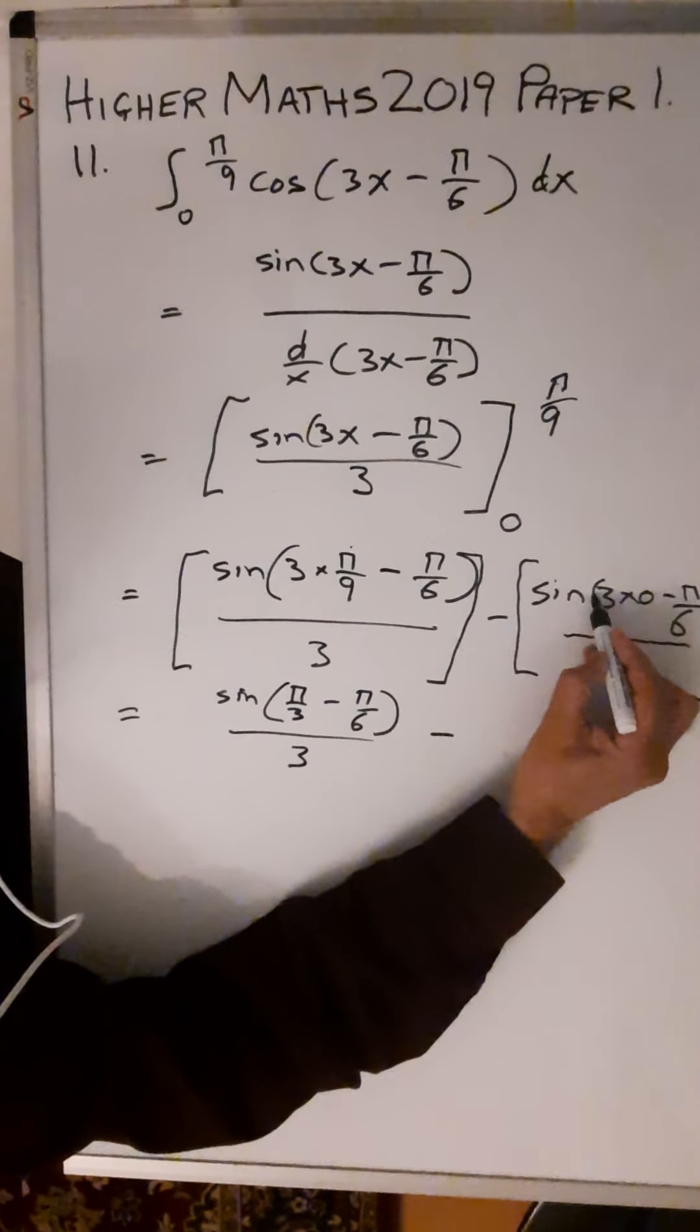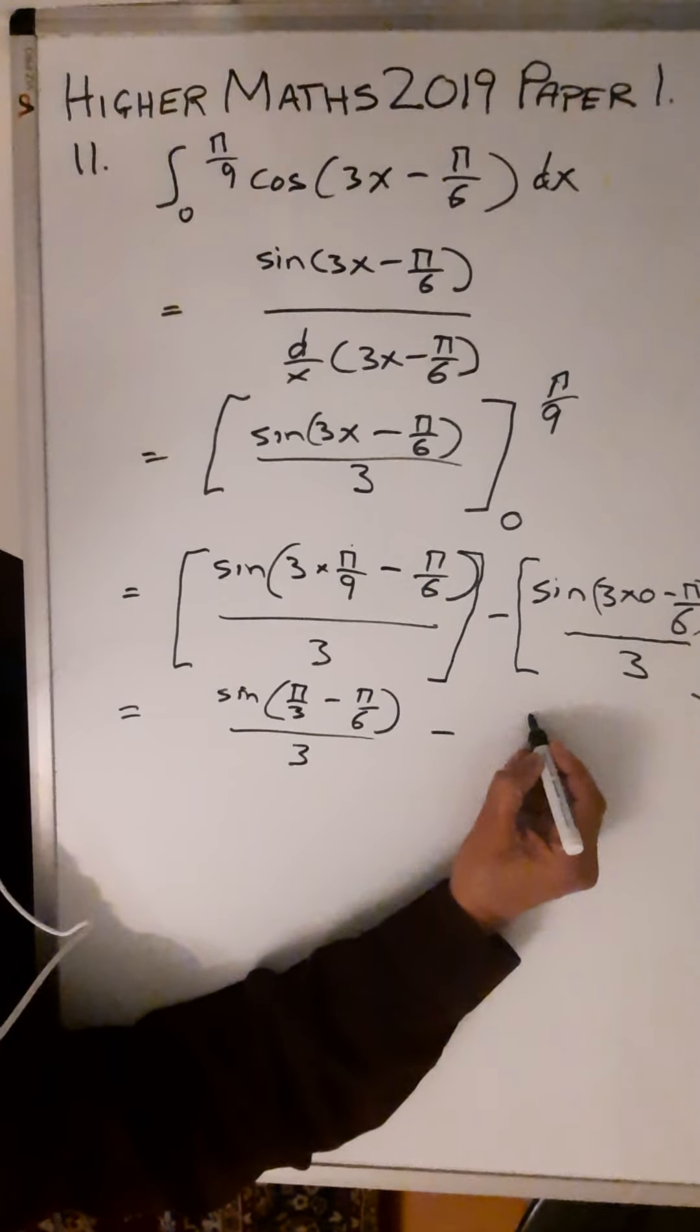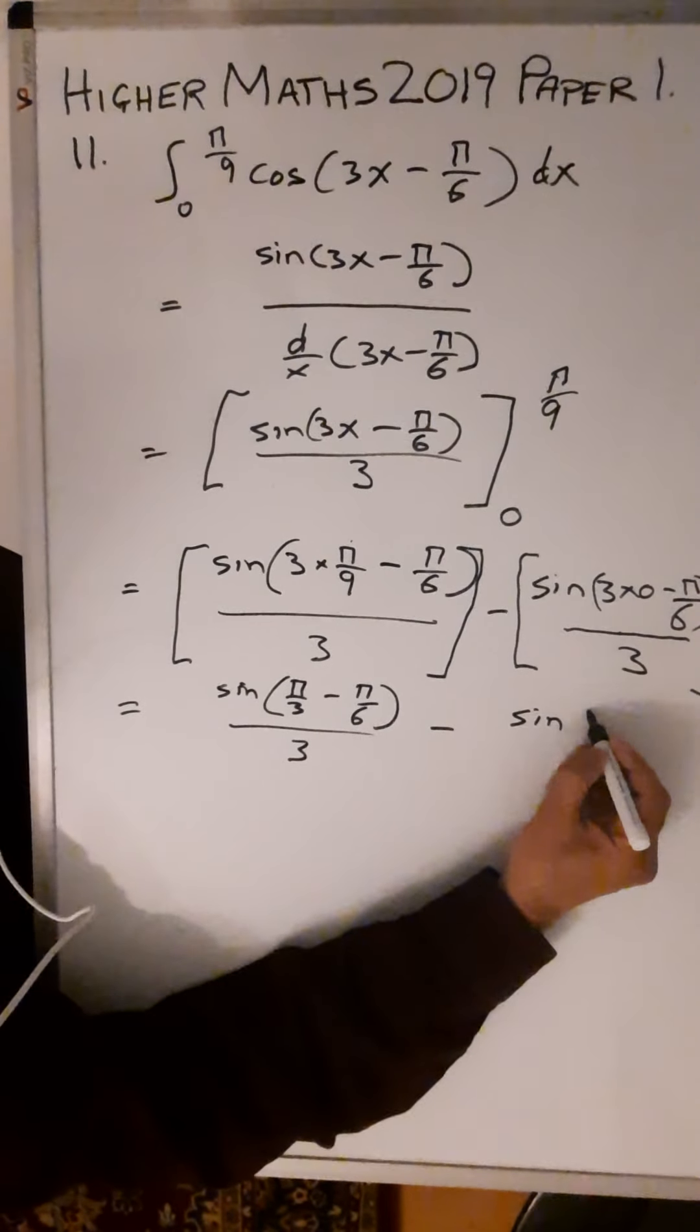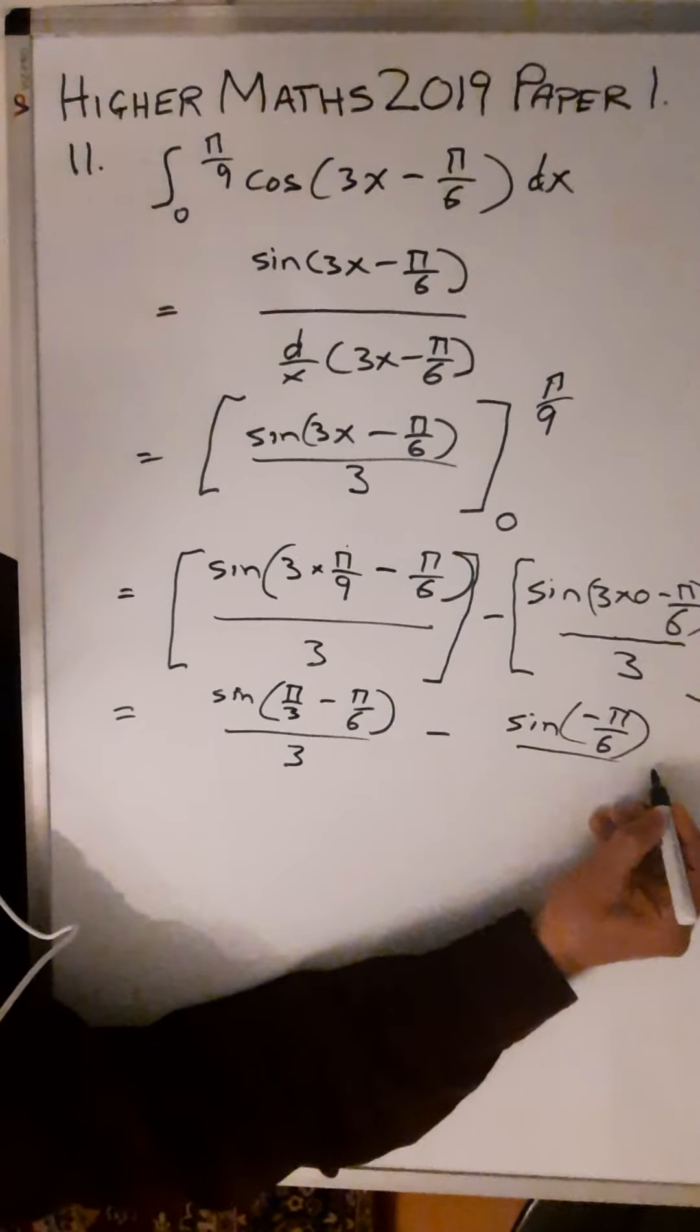Minus 3 × 0 is just 0, so that's just going to be sin(-π/6) all over 3.